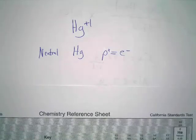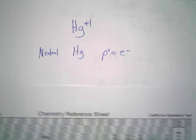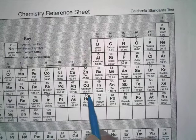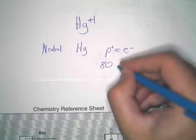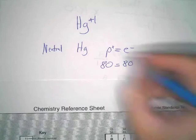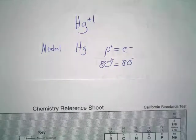So, if it was going to be neutral, and we know the atomic number is 80, how many protons does that have? 80. If it's neutral, then how many electrons does it have? 80. 80 plus, 80 minus, neutral, simple.